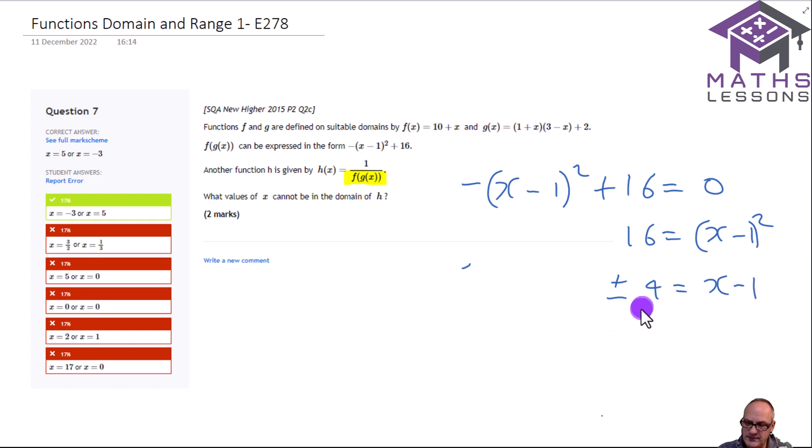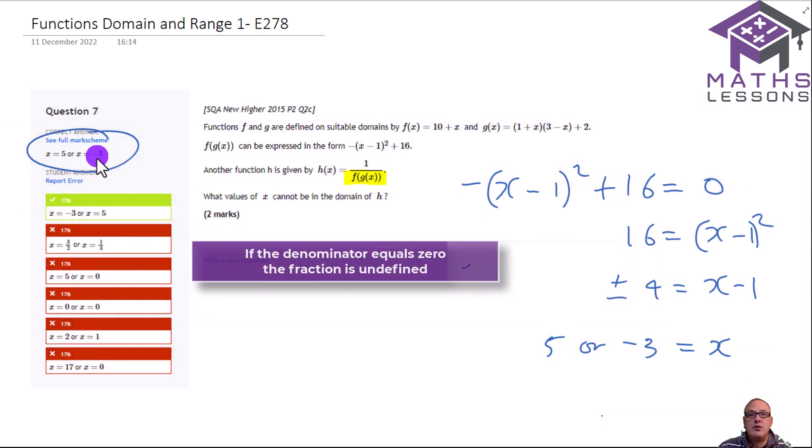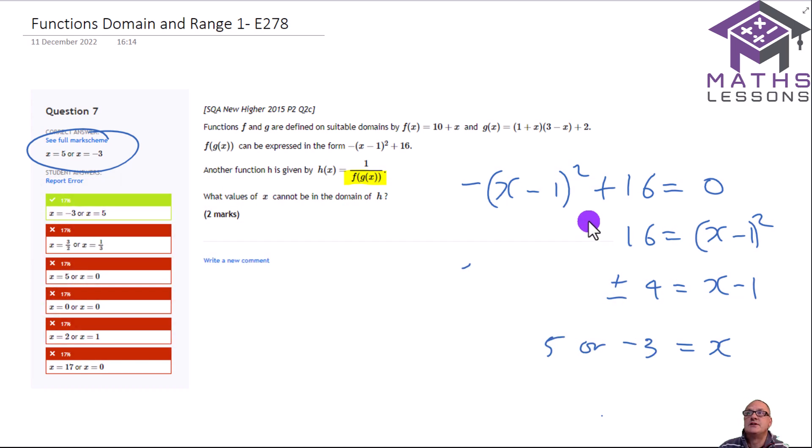Then we're going to add 1 to both of these, so we could have 5 or minus 3 equal to x. Add 1 to 4, you get 5. If you add 1 to minus 4, you get minus 3. And you can see why 5 and minus 3 were the correct answers. So let's just go back over the key thing: the denominator cannot equal 0, so we find out when this happens, and those are the two values we can't put in.